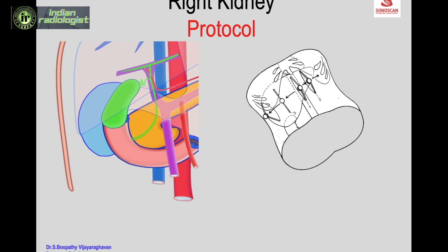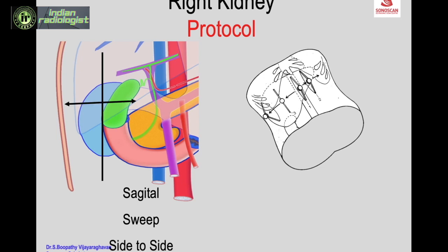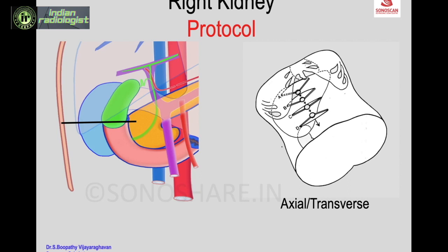Regarding the protocol: this is the schematic of the sagittal scan and the sweep by moving side to side. It can be a coronal scan as the longitudinal scan with a sweep anteriorly and posteriorly. Then the axial or transverse scan, which can be subcostal or from the flank, moving up and down for the sweep.